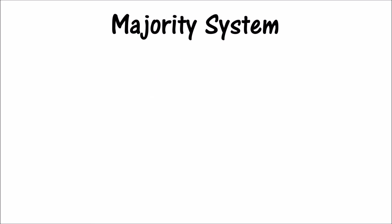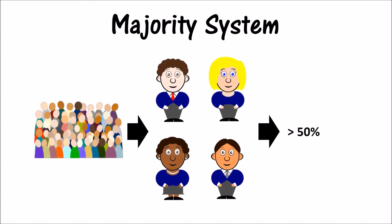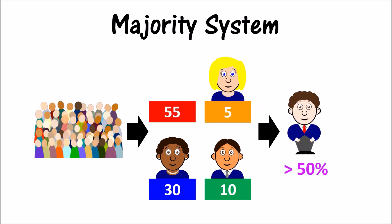A majority system requires a candidate to earn more than half of the votes to win. For example, if there are four candidates in an election and one candidate gets five votes, one gets 10, one gets 30, and one gets 55, the candidate with 55 votes wins because he won more than half of the votes.